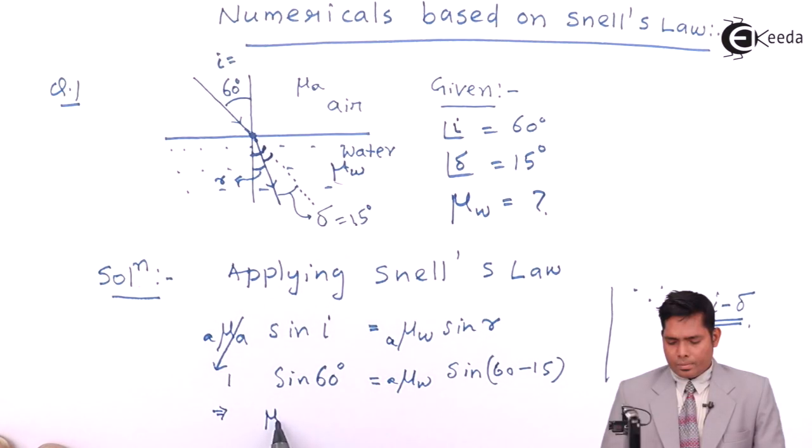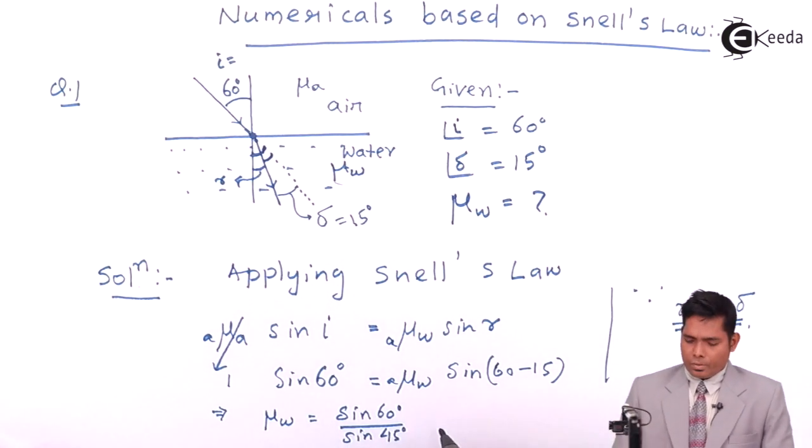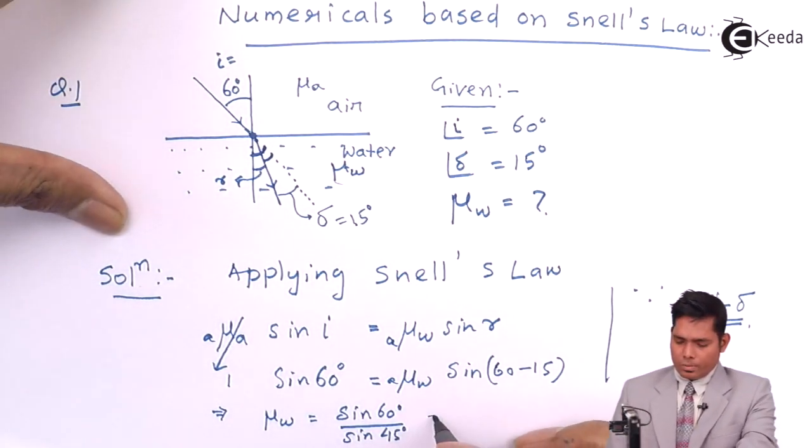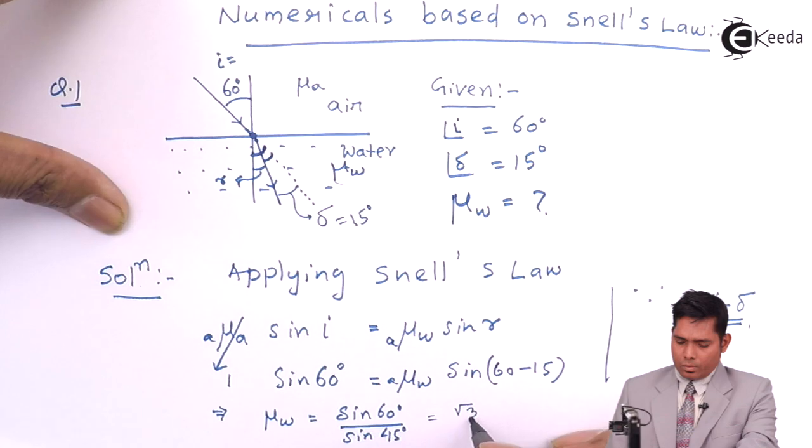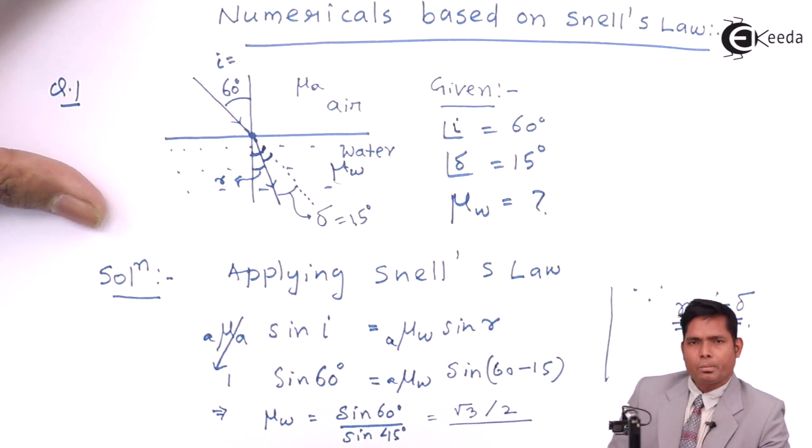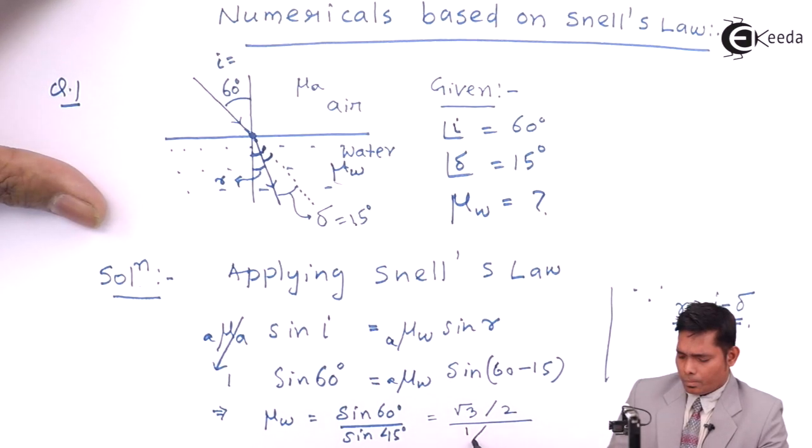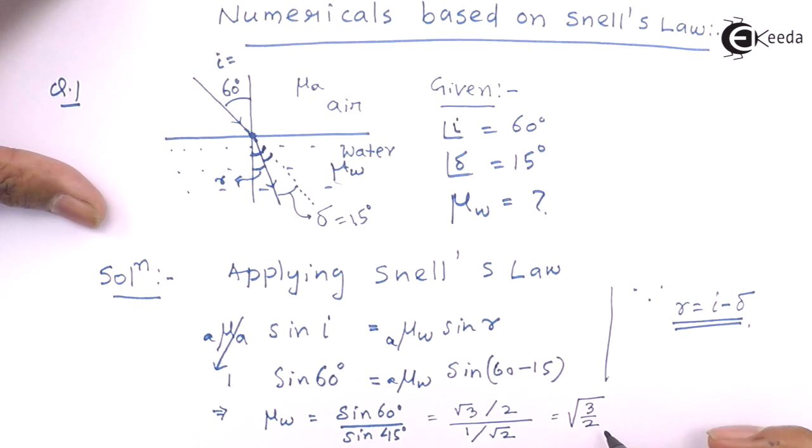This implies, this is root 3 over 2, sine of 60, and sine of 45 is 1 upon root 2. So this is root 3 by 2.